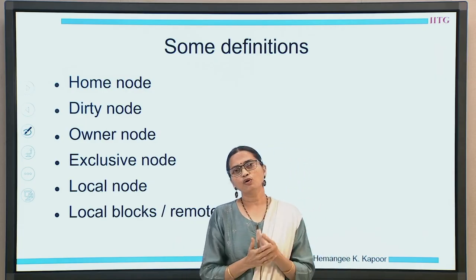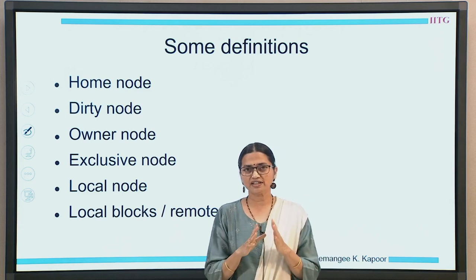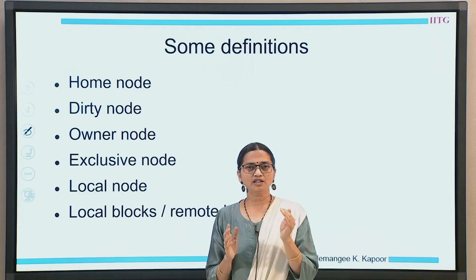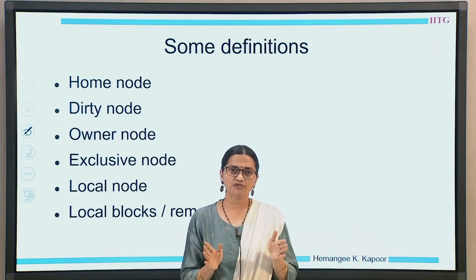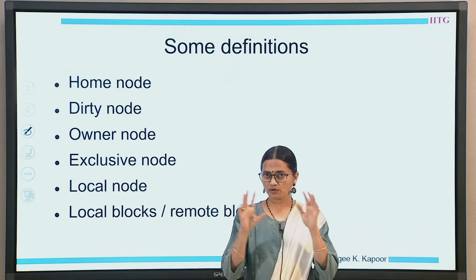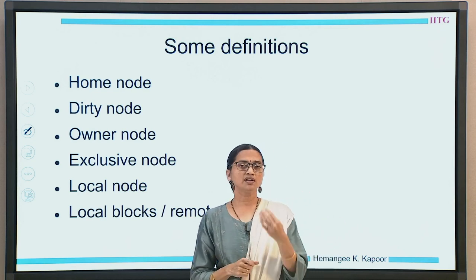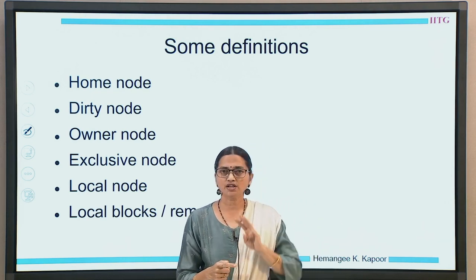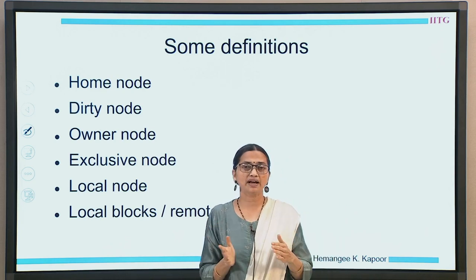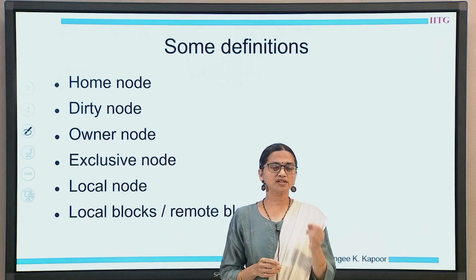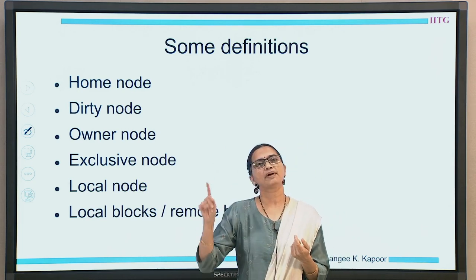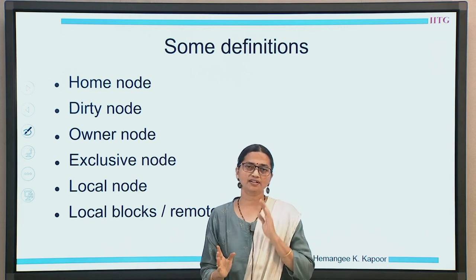We have a concept of a home node. The home node, as the word says, is the node where the data block resides. My system consists of several nodes connected to a scalable network. Every node has a processor, a cache, and a memory. When I say home node, a processor accesses a block and if that block is available in the memory slice of its node, it is called a home node.